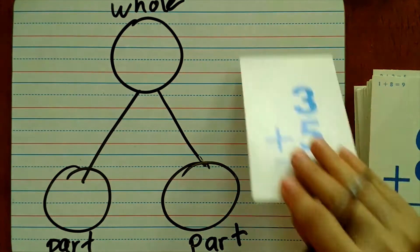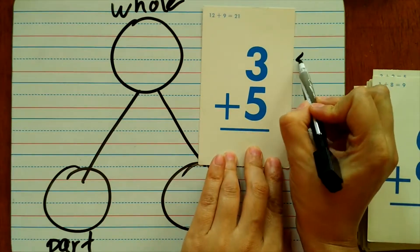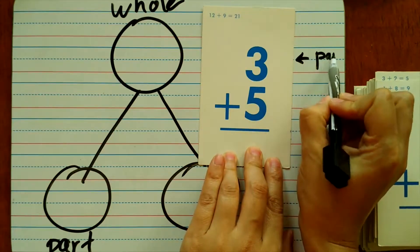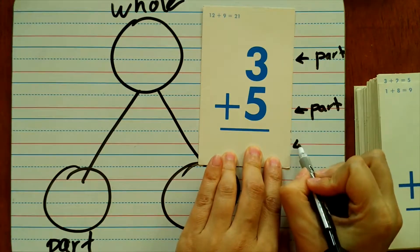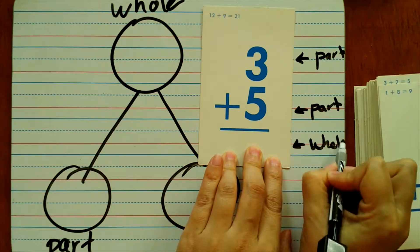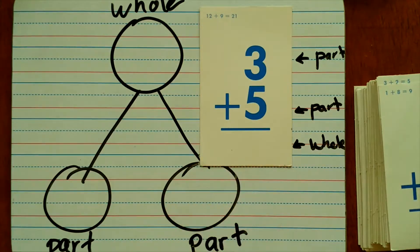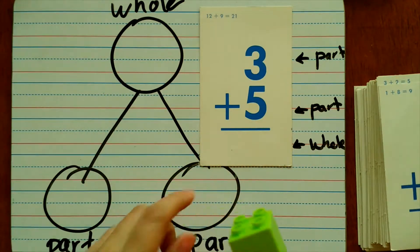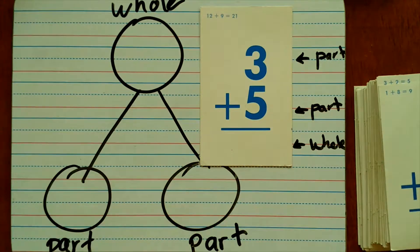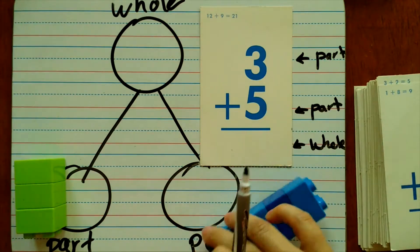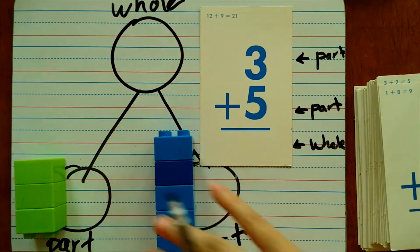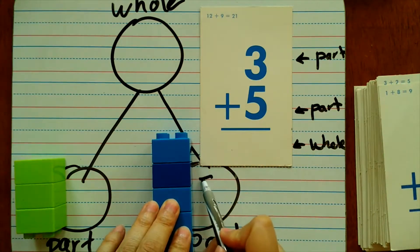So for the flashcard, this would be your part, this is another part, and your total will be your whole number. That's how we'll start. You can either start using your manipulatives where you put one of your parts there, your other part five will go here, or you can write them down.